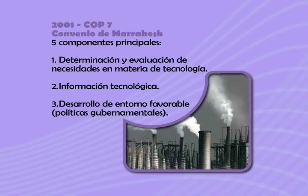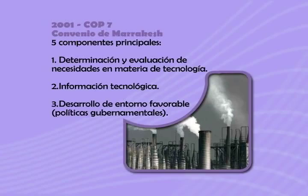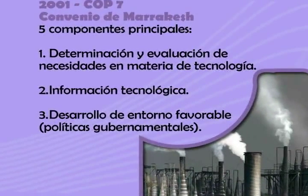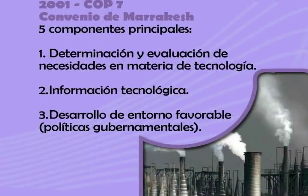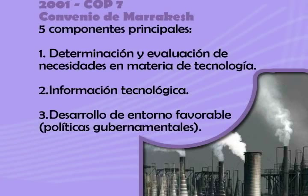Posteriormente, en el marco de la COP 7, se acuerda la adopción de medidas significativas y eficaces para promover la aplicación de la transferencia de tecnología. Estas medidas consisten en cinco componentes principales. El primer componente es la determinación y evaluación de necesidades en materia de tecnología: es necesario hacer una evaluación a nivel de los países en desarrollo sobre los requerimientos de tecnología, qué se necesita para implementar las disposiciones de la Convención, y solicitarlo a los países desarrollados.